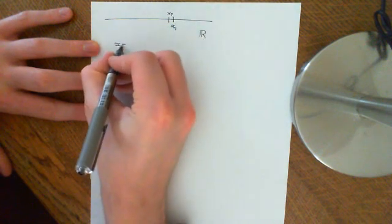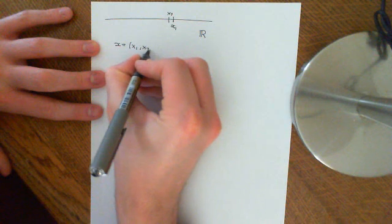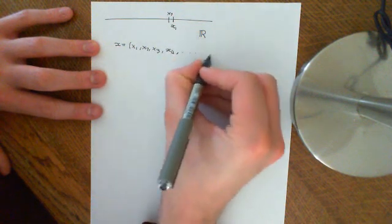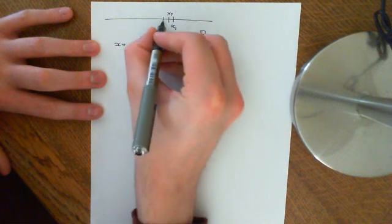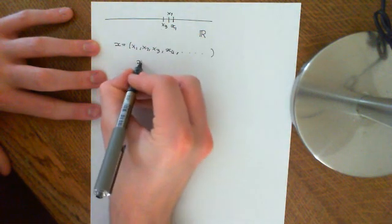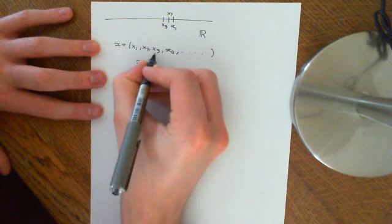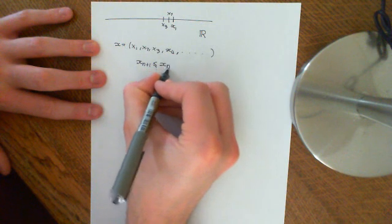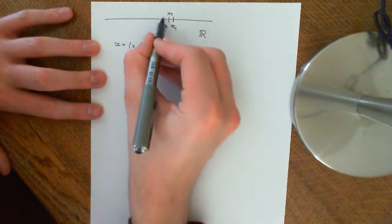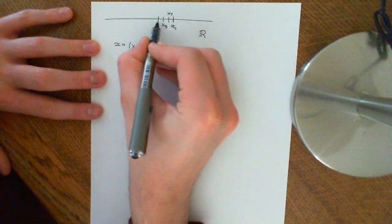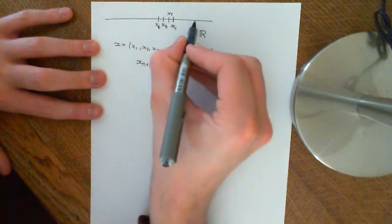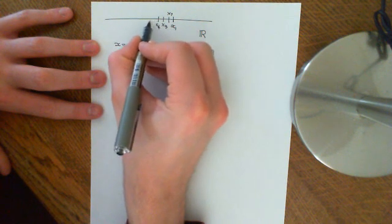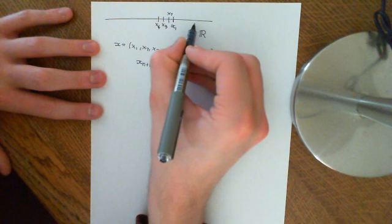Basically, I have some sequence x, which is x1, x2, x3, x4, etc. So it goes on and on, and it's a sequence of real numbers, and it's monotonically decreasing. So if I take x_{n+1}, the next term, it's going to be less than or equal to x_n. So x4 is either going to be on top of x3, or it's going to be to the left of it — it cannot be to the right of it, it cannot be greater than it.